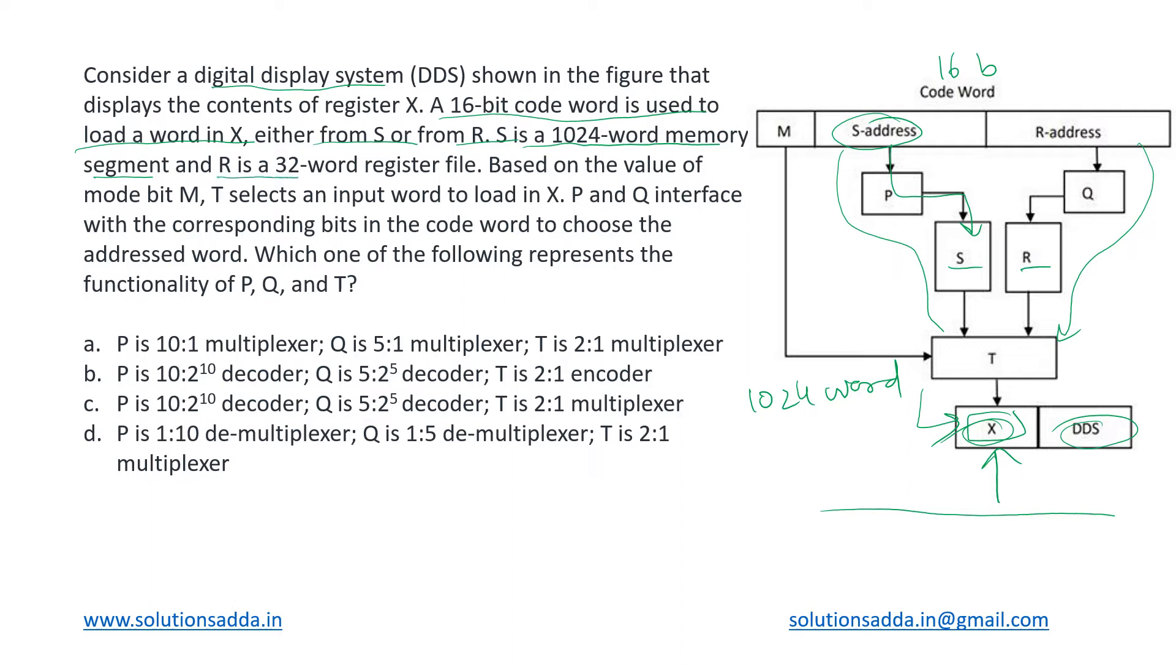And then coming to this R, it is a 32-word register file. How much is that? 32-word file. Now based on the value of a mode bit M, so M is any mode bit, maybe it can be either zero or one. When zero choose P, when one choose Q, and then accordingly their contents are loaded.